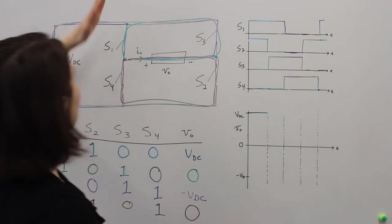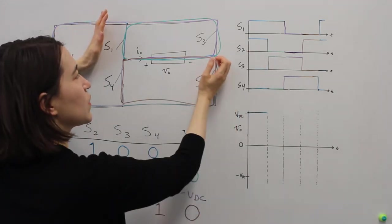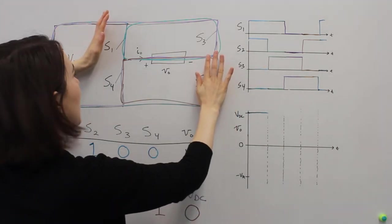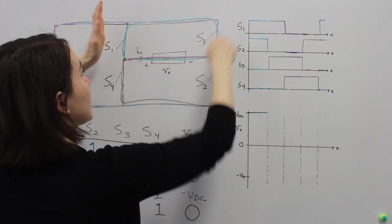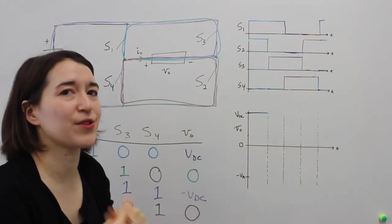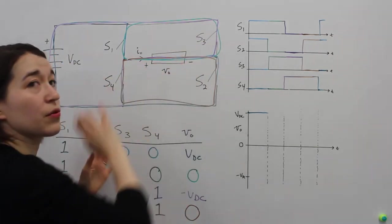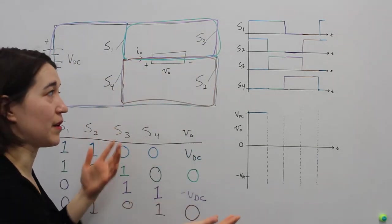Then we are going to maintain S1 on, but then we are going to switch this off, S2, and then switch S3 on. So now we are at 0, but current is still able to flow. That's the important part. Current is still able to flow through our load, but the voltage is simply 0.